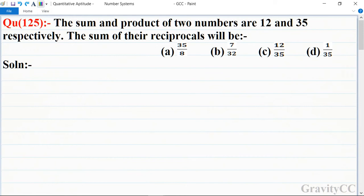Quantitative aptitude chapter number system, question number 125. The sum and product of two numbers are 12 and 35 respectively. The sum of their reciprocals will be what? In this question, first of all we let the two numbers be x and y.